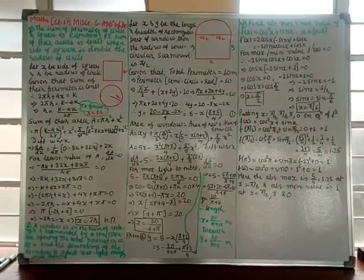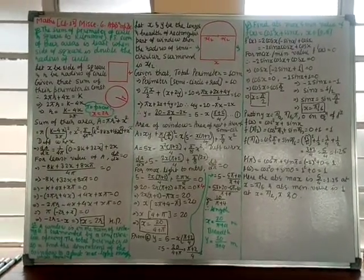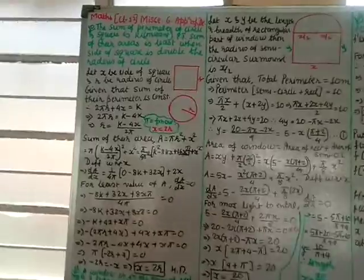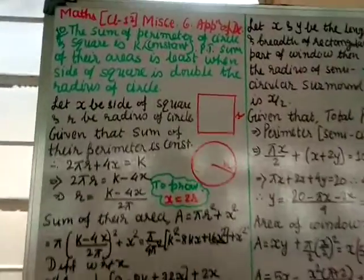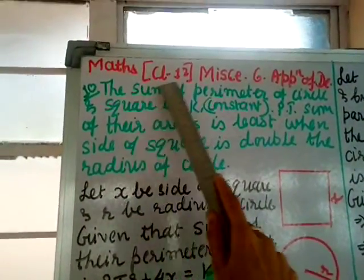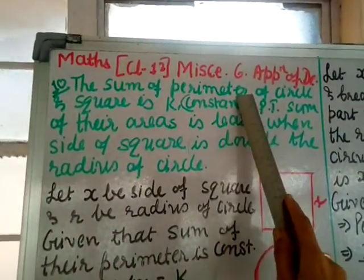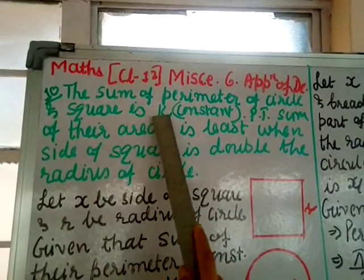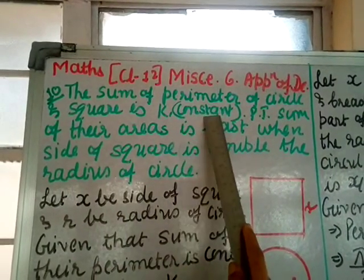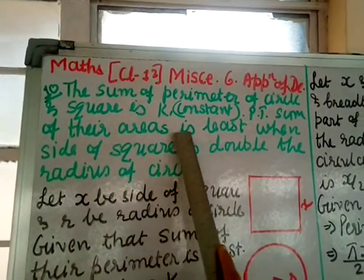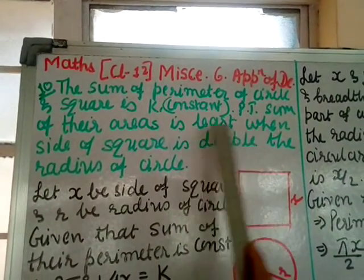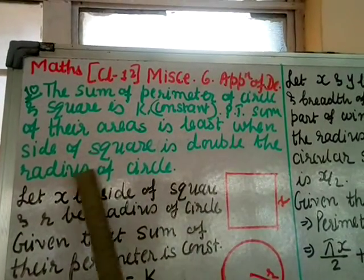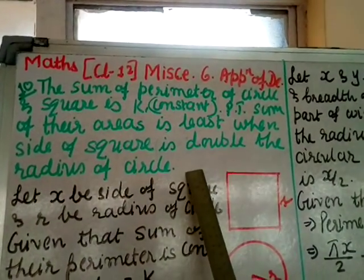Mathematics Class 12, Chapter 6, Application of Derivatives, Miscellaneous Exercise. Question 10: The sum of the perimeter of a circle and a square is k, a constant. Prove that the sum of the areas is least when the side of the square is double the radius of the circle.